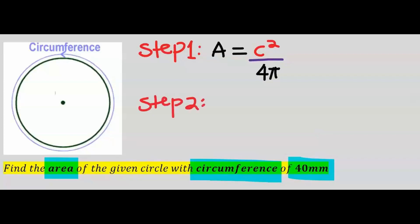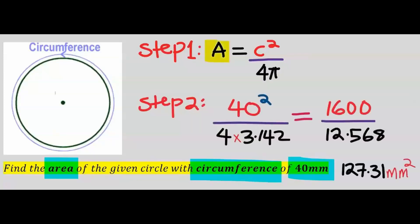If you substitute and solve carefully, the area of the circle is 127.31 millimeters squared to two decimal places and five significant figures.